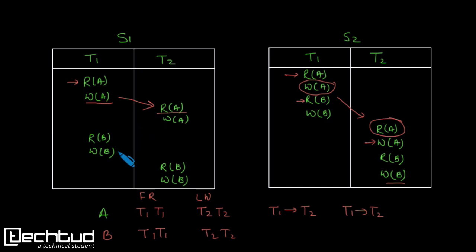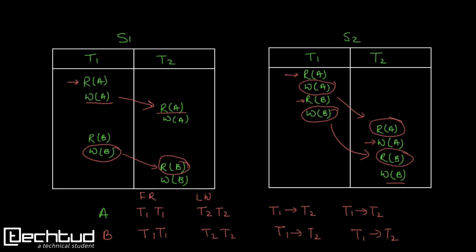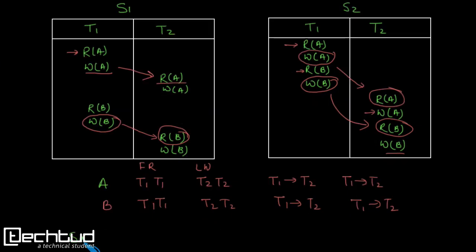Now let's check for variable b. In schedule s1, b is written by t1 and then read by t2, so the order is t1 followed by t2. In schedule s2 also, b is written and then read, giving t1 followed by t2. All three conditions are met, so we can conclude that schedules s1 and s2 are view equivalent.